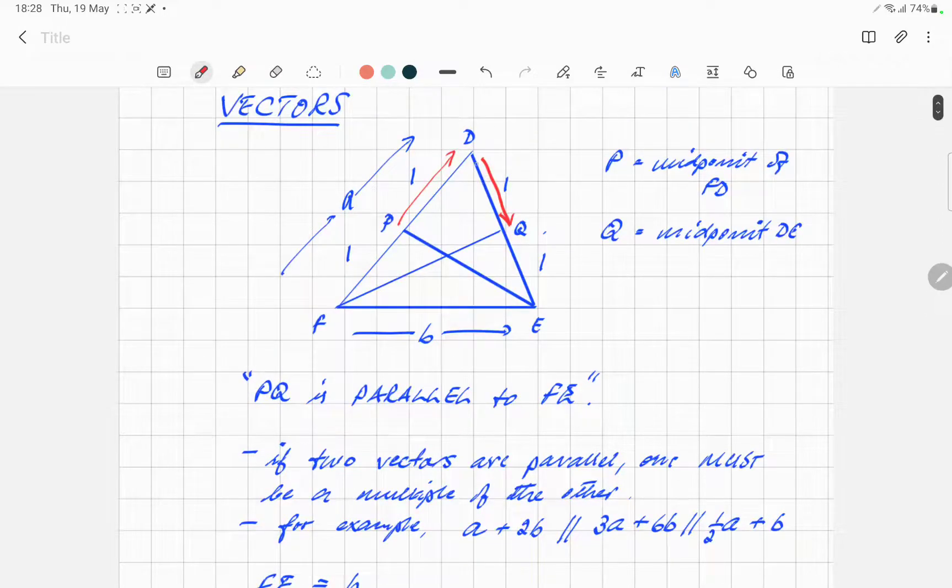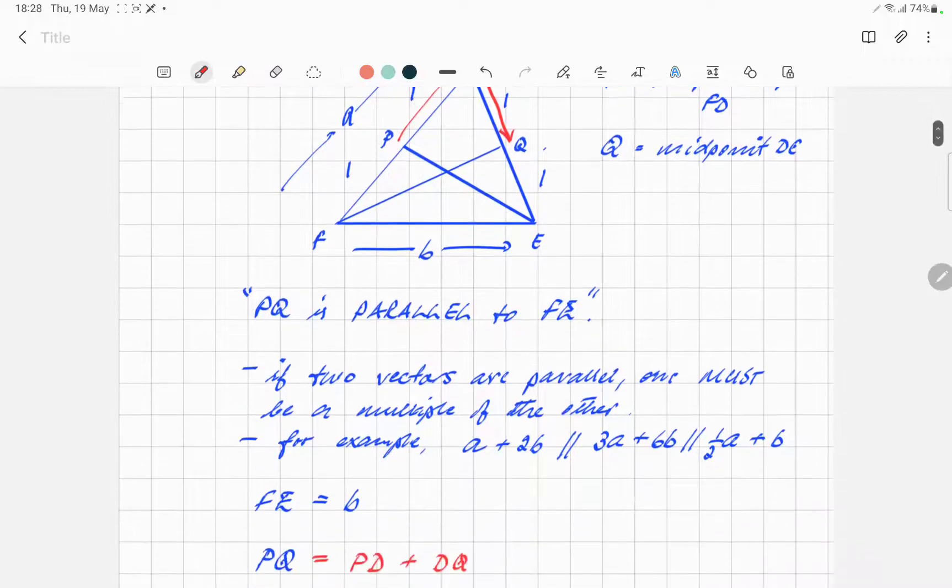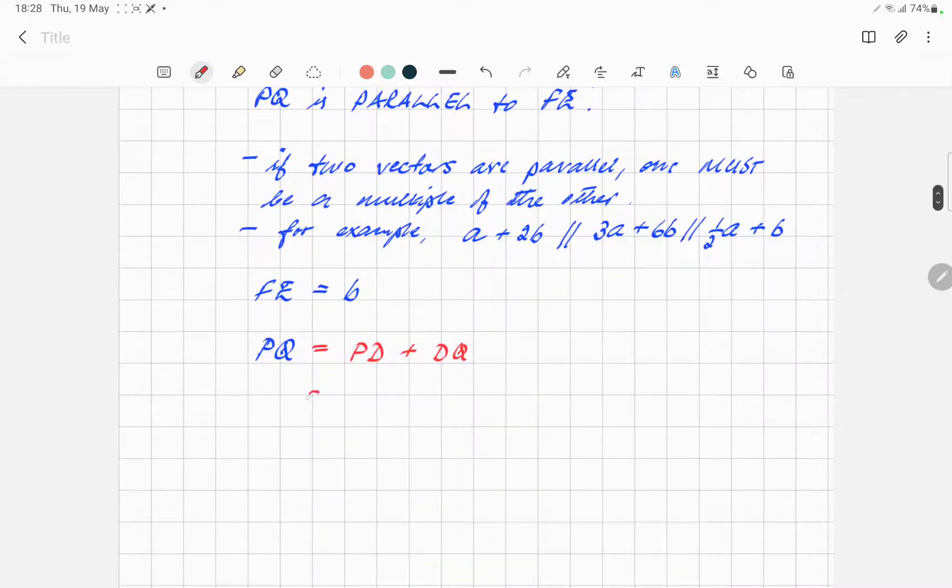We want to expand this. P to D plus D to Q. D to Q, we can see, is half of D to E. So P to D plus half D to E.